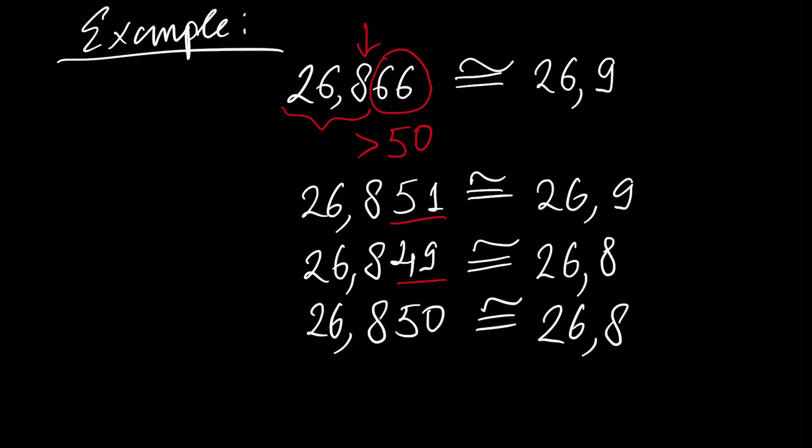So the common general rule is: if our tail is bigger than 50, then we add 1 to the digit we want to leave, because here we want to round off and leave three digits.